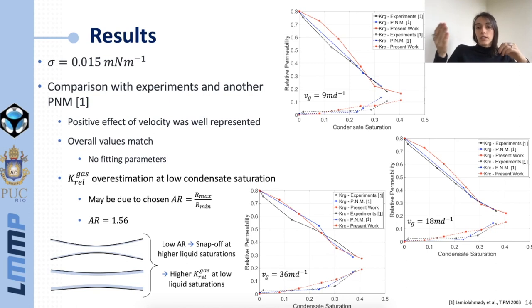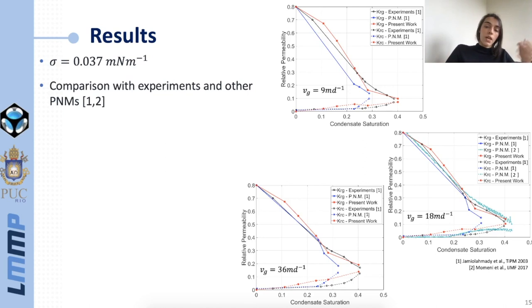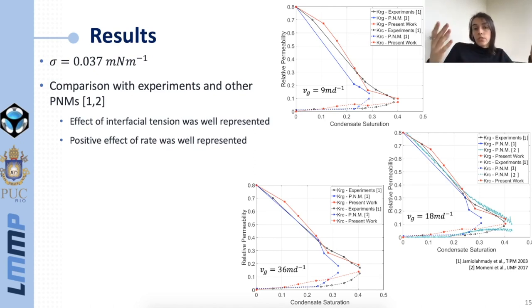Now we move to the other set of results obtained with the highest interfacial tension. Those are the same curves obtained with the same velocities and now we compare our model curves with experiments in black, this other pore network in blue, and for this case specifically we found another pore network model in the literature too. Now if we compare this actual results with the other one we can see that the effect of interfacial tension was also well represented. For the same condensate saturations those values here are lower than the other values and this was expected because we have higher interfacial tensions. Again we can see that the positive effect of rate was well represented and finally that the overall values match.